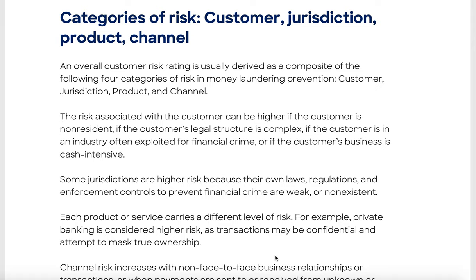The categories of risk include the main ones: customer, jurisdiction, product, and channel. Your risk rating is made up of a bunch of risk ratings across various categories — client type, jurisdiction (which is essentially location), the type of product, and the channel through which the product is delivered.